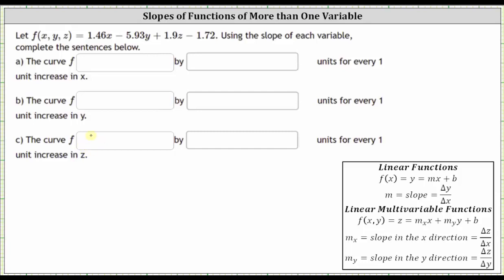A linear function of two variables must be in the form of f of x comma y, where z equals m sub x times x plus m sub y times y plus b, where m sub x is the slope in the x direction, which gives the change of z with respect to the change of x. And m sub y is the slope in the y direction, which gives the change in z with respect to the change in y.